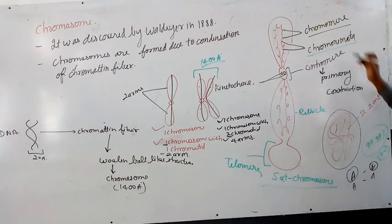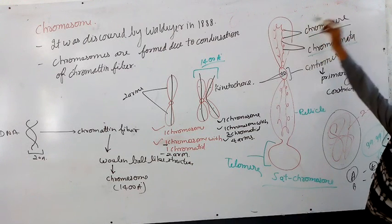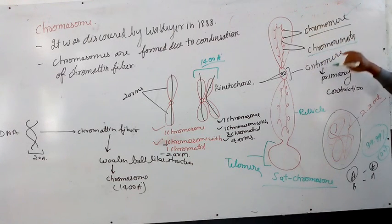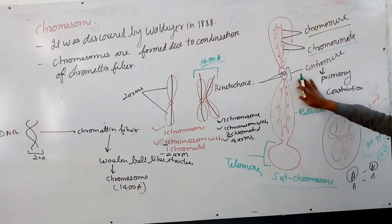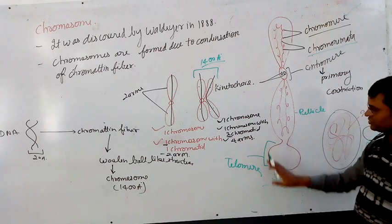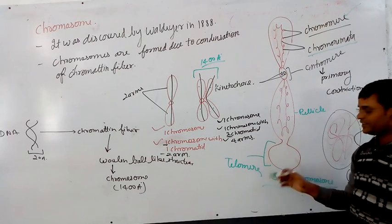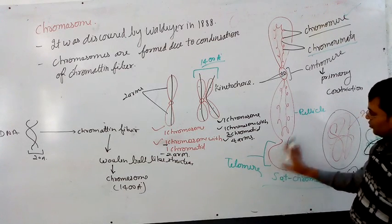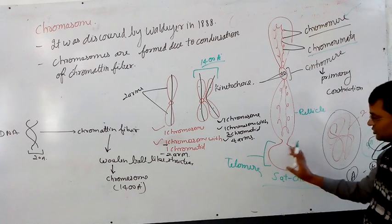Here is the secondary constriction where the nucleolar organizing region is. Here is the portion beyond the secondary constriction, there is called the satellite. A whole structure can be called satellite.